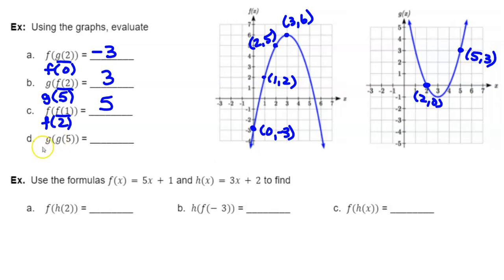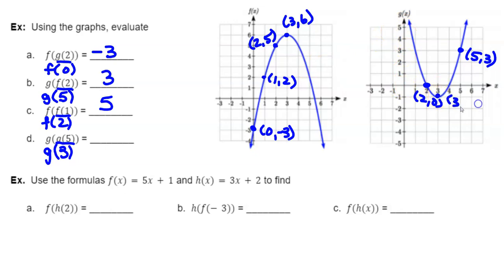For g of g of 5, we're on the g function entirely. When x equals 5, the matching y value is 3. So that 3 goes inside the outer function. Now when x equals 3 on g, the matching y value is negative 1 — the point is 3, negative 1. Therefore, g of g of 5 is equal to negative 1.